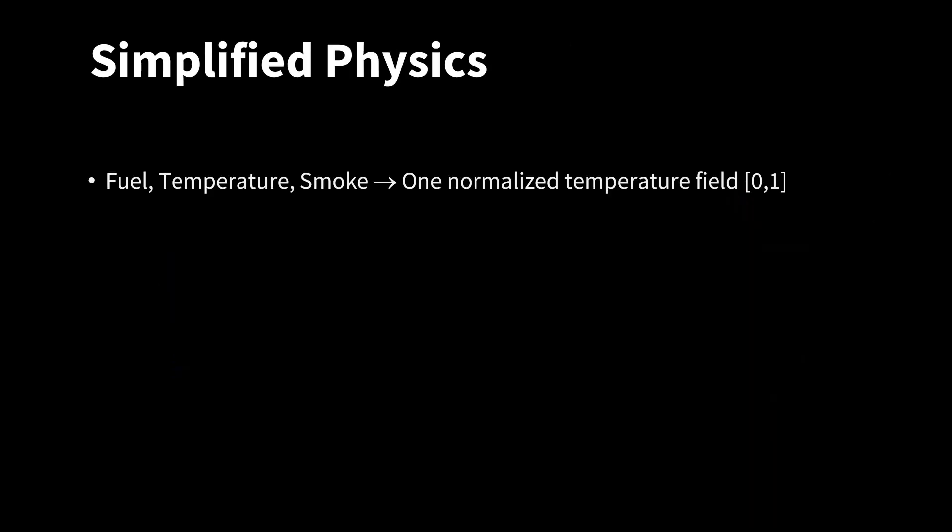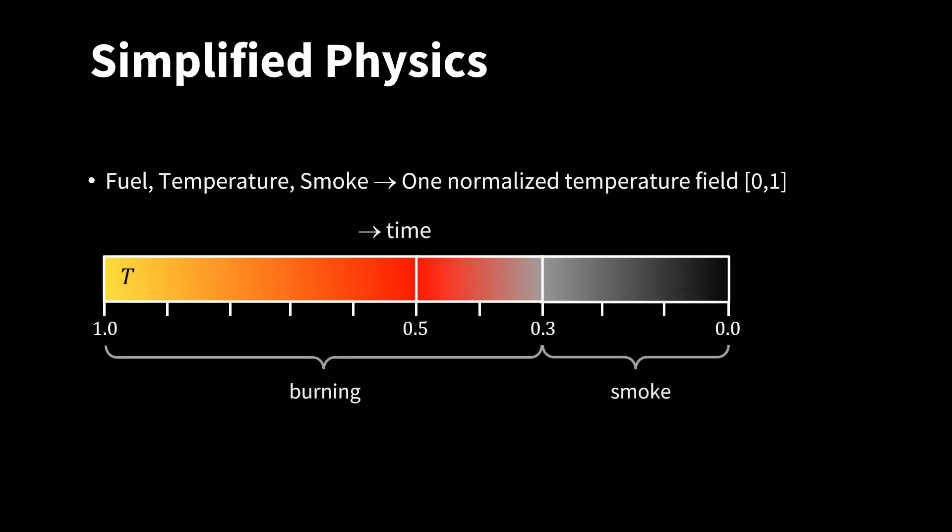I simplified physics a bit. In reality, there are multiple fields, such as fuel, temperature and a smoke field. We use only one field, which is a normalized temperature field. It has values between 1 and 0. For values between 1 and 0.3, we consider the field to represent a burning gas. Between 0.3 and 0, it represents smoke. The value decreases over time. We use three color gradients to render it. One between yellow and red, one between red and gray, and one between gray and black.